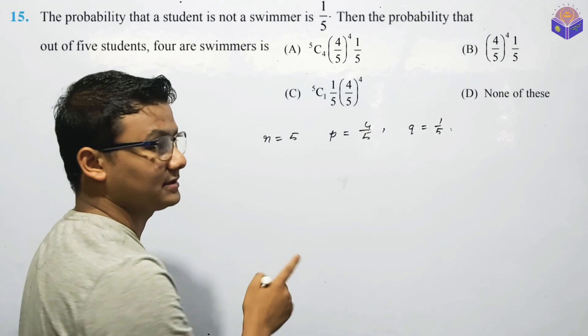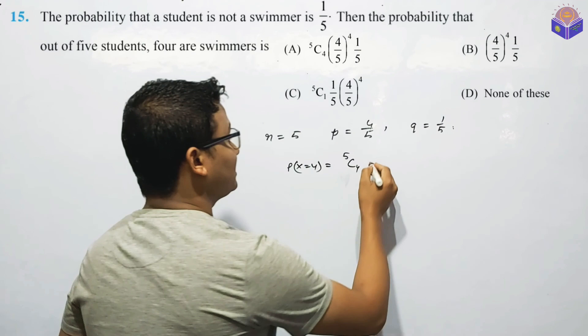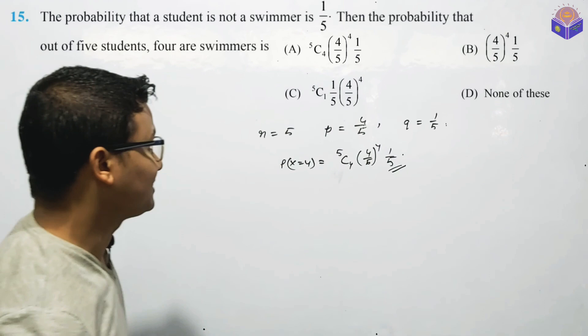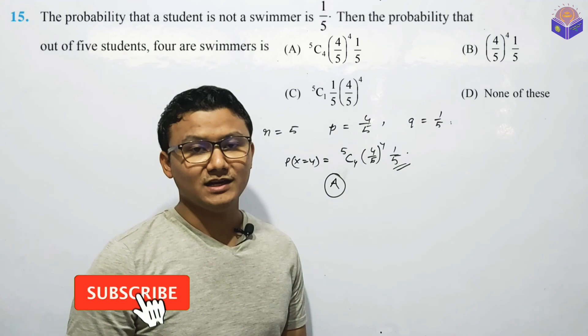This is the probability of P of high. If you have a trial machine, you can have success. Success is 4 by 5, all to the power of 4. Failure is 1 by 5. Question number 15. This is exercise 13.5 complete. Next, miscellaneous exercise. I will show you the video.